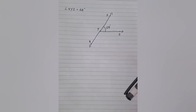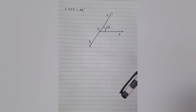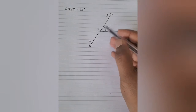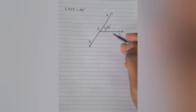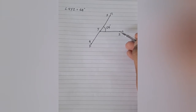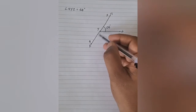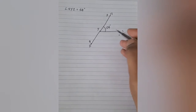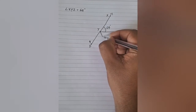Now, in the question further, it says that if ray YQ bisects angle ZYP. So Q is not in the picture as it is. Let's read the question further: ray YQ bisects angle ZYP. Where is angle ZYP? So if there has to be a ray YQ, it would be something of this kind. Yes, this is how ray YQ should be there.